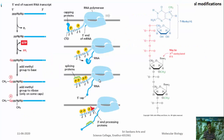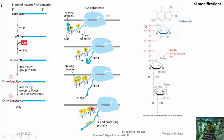The first modification is capping. Caps are added to the 5' end of the RNA, which is considered the head. A 7-methylguanosine residue is added — methylation occurs at the seventh nitrogen — to the 5' end of the RNA, forming the cap structure. This is added through a triphosphate linkage, resulting in a 5'-to-5' phosphodiester bond.